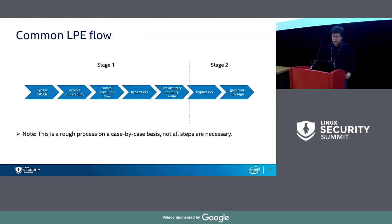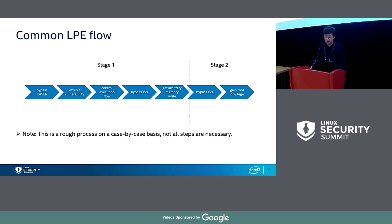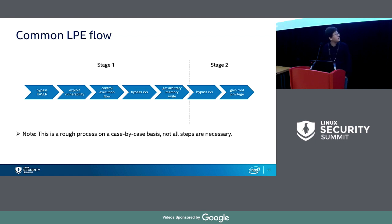To easily understand the following case studies, let's look at the common root flow on Linux. The whole flow consists of two stages. The purpose of stage one is to get arbitrary kernel memory write, and stage two is to get privilege escalation. Of course, there are some steps to bypass related mitigations in the process. There are often different techniques for different vulnerability types, and for parts like controlling execution flow, getting arbitrary memory write, and root privilege, there are also some general tips.